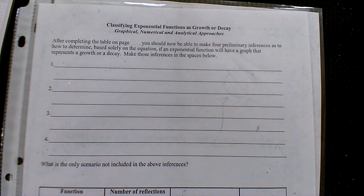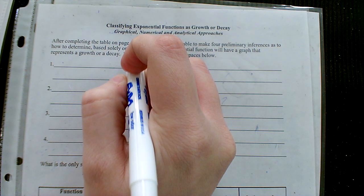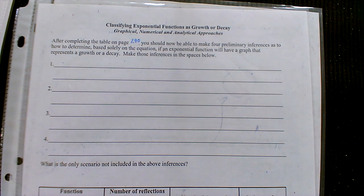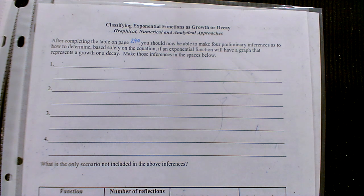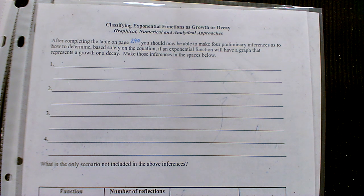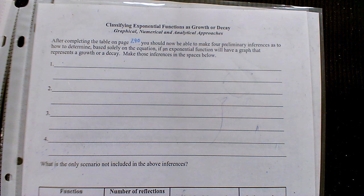On page 291, we're going to also reference the table that you completed on 290, so maybe you want to have that one available as well. We're going to look for patterns in that table so we can get some relationships. We're eventually going to get to the point where we can look at an equation and determine if it's exponential growth or exponential decay based on certain things going on in the equation.